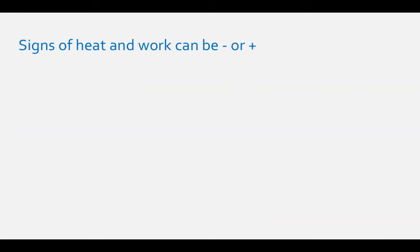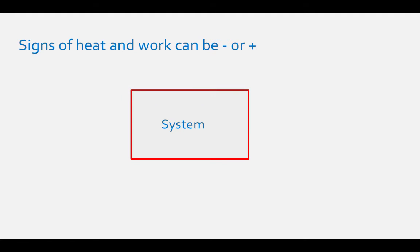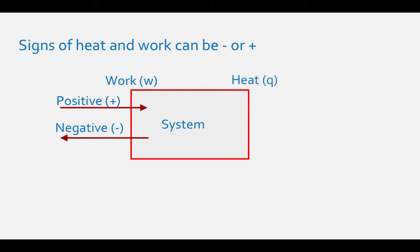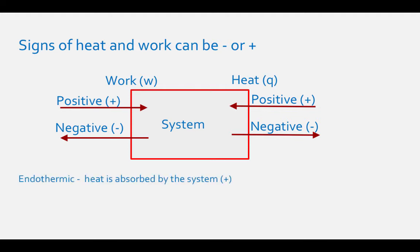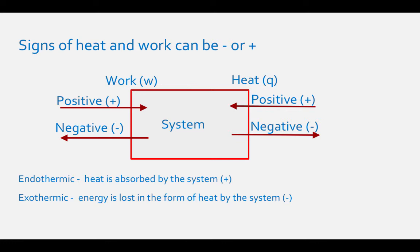The definition of the change in internal energy for a system is work plus heat. The signs of these variables are important because work and heat can both be negative or positive. We will draw a diagram to help explain this. In the diagram, the system is represented by a box. Work done on a system is positive work, and work done by the system is negative work. Heat absorbed by the system is positive heat, and heat released by the system is negative heat. Endothermic reactions are ones in which heat is absorbed by the system and the heat is positive. Exothermic reactions are ones in which energy is lost in the form of heat by the system and the heat is negative. It is best to keep this diagram in mind when working with problems that utilize this equation.